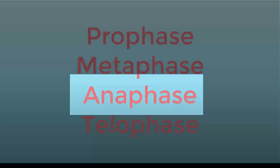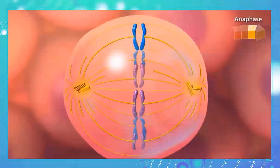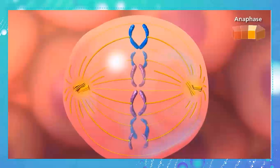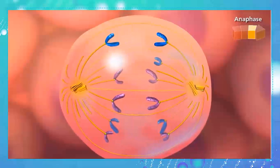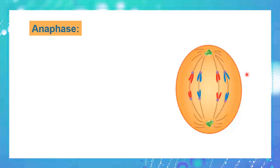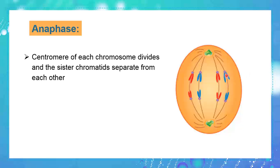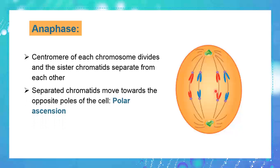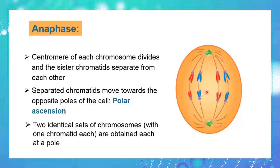As you've seen throughout anaphase, the centromere of each chromosome will divide into two centromeres, allowing each chromatid to separate. The two separated chromatids will then move towards the opposite poles — a movement known as polar ascension. This allows two identical sets of chromosomes, for example the blue ones here, to be found at each pole of the cell.